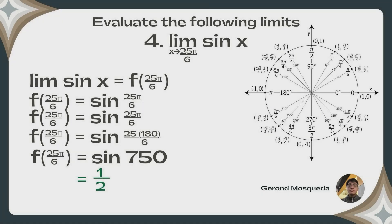Problem 4: the limit of sin(x) as x approaches 25π/6. We substitute 25π/6 into x to get sin(25π/6). Converting π to 180 degrees, we solve 25 times 180 over 6, which equals 750. So we need sin(750°). Finding this on the unit circle gives us 1/2. Therefore, the final answer is 1/2.